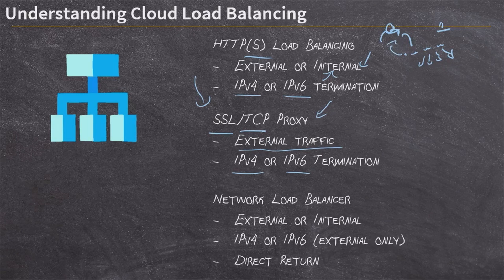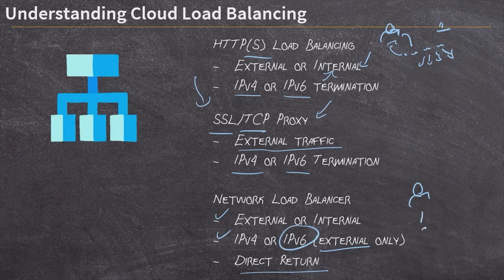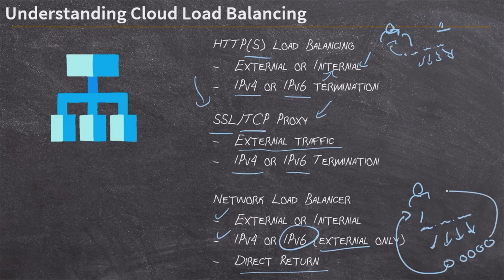The network load balancer is for all other network traffic. It is available both internally and externally, with IPv4 or IPv6, though IPv6 is only for external traffic. Importantly, the network load balancer uses direct server return — traffic comes in to a single IP address and gets split across multiple instances, but the return traffic skips the load balancer and goes directly back to the user from whichever instance handled the request, rather than passing back through the load balancer.